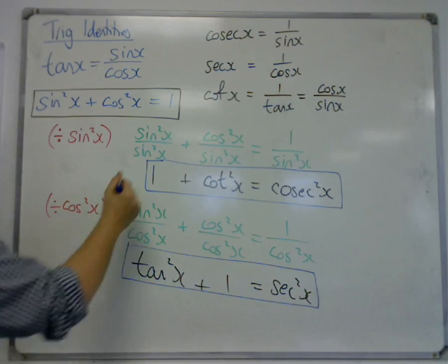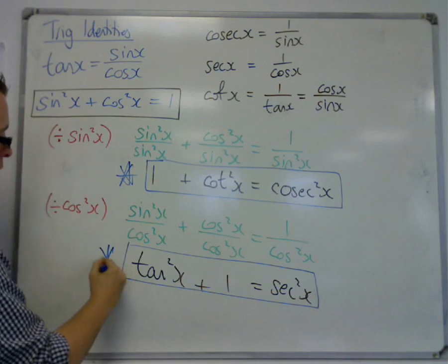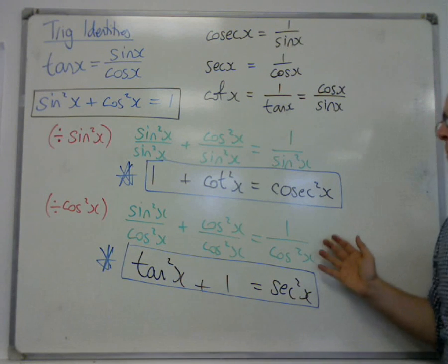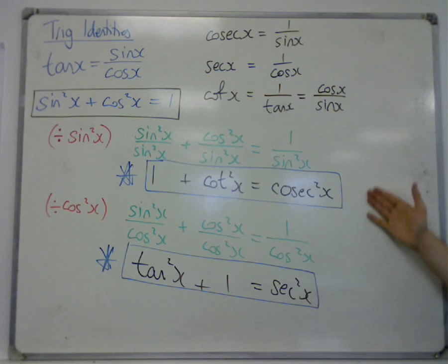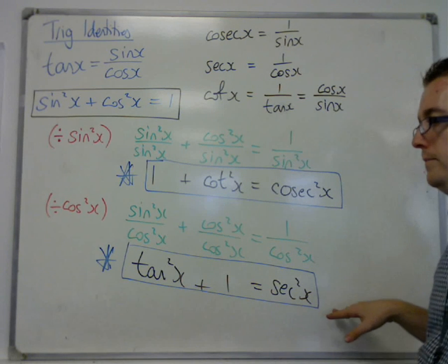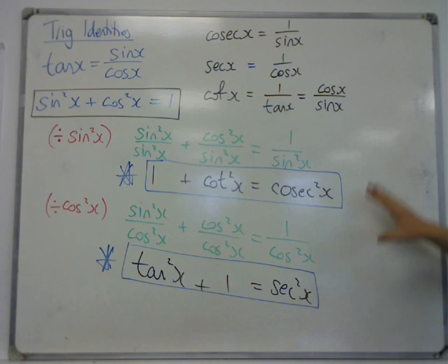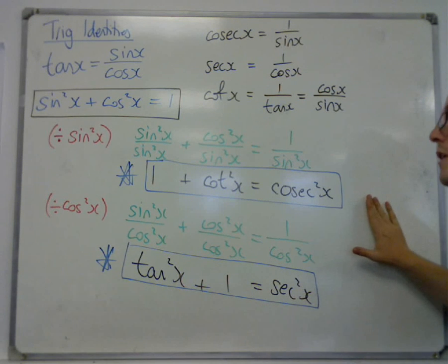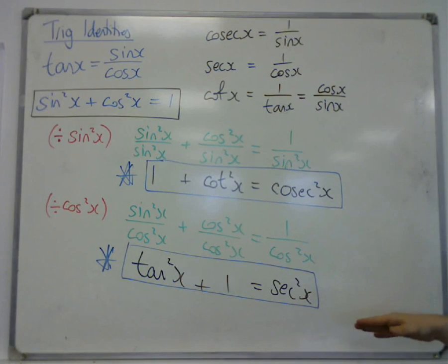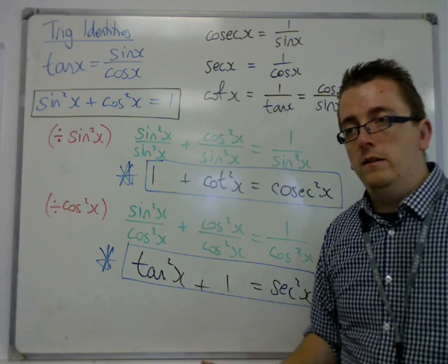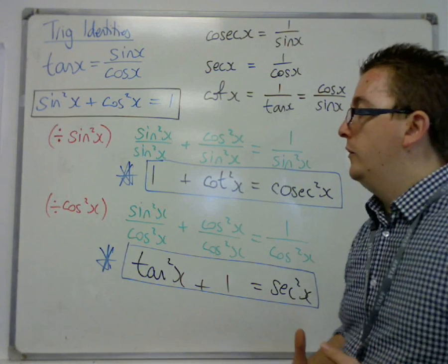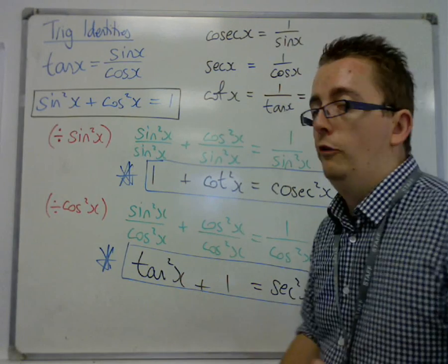So we have two new trig identities. Now you either memorise them, because they are essential knowledge, we must be able to use them for core 3 and core 4, mainly core 3. You must be able to either memorise them, or you can get to them using this process, by remembering this process. Either way, you must be able to come up with them in the exam, otherwise you will fall short.